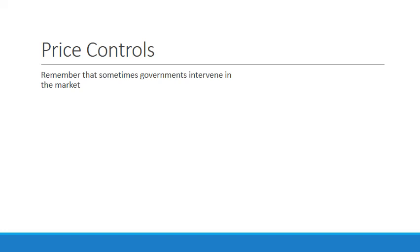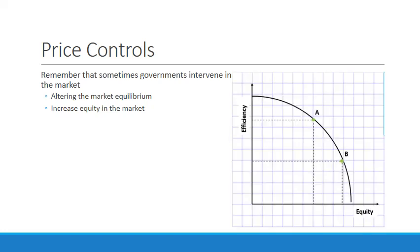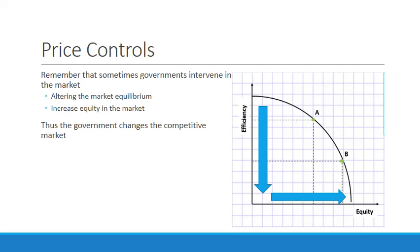Sometimes governments intervene in the market — one of the things we talked about in our basic principles of economics. When they do that, they're altering the market equilibrium where price and quantity intersect. The reason why price controls are created and why the government would intervene is to increase equity. Looking at the production possibilities curve comparing efficiency and equity, a decrease in efficiency creates an increase in equity — and this is exactly what the government is attempting to do, to make a market more equal, but in doing so they actually decrease efficiency.